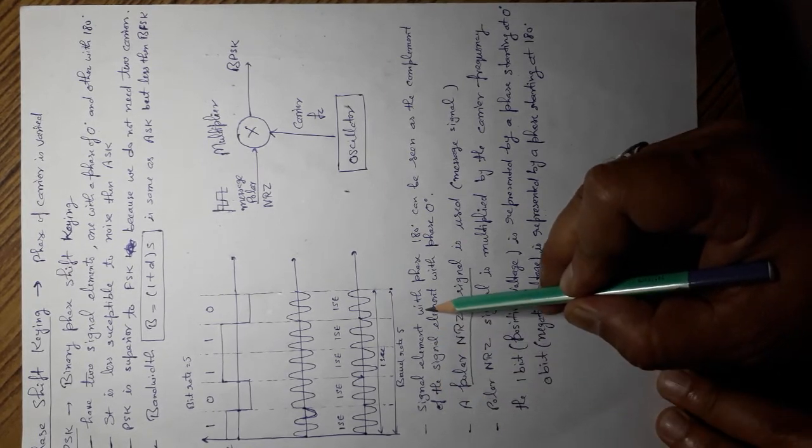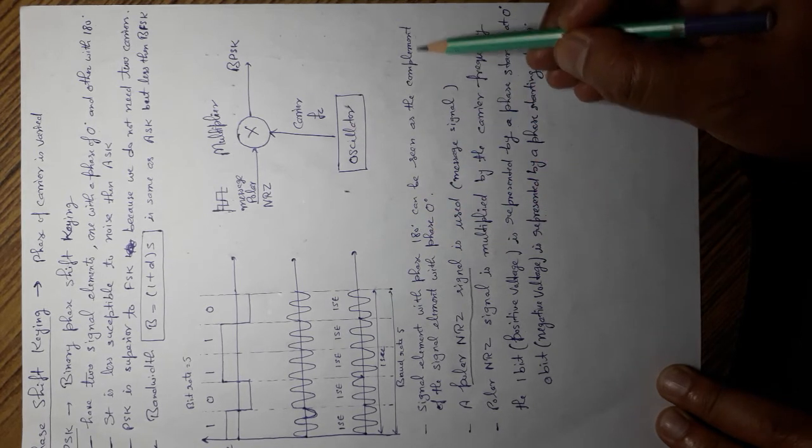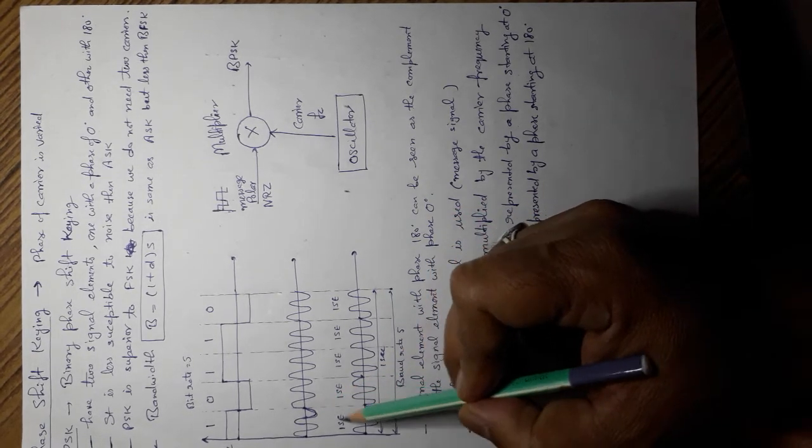Signal element with phase 180 degrees can be seen as the complement of signal element with phase 0. These are the complement of each other.